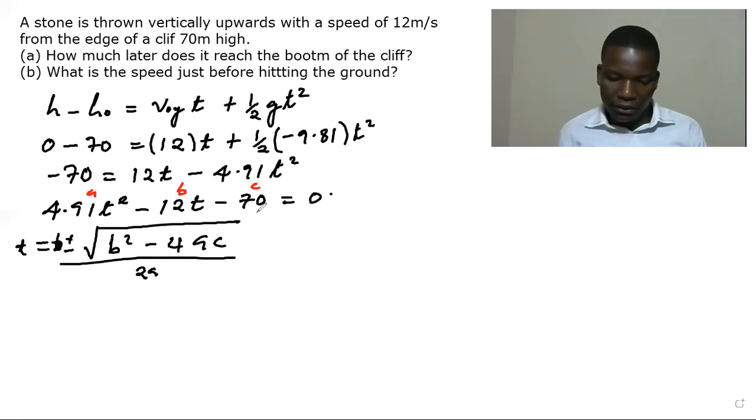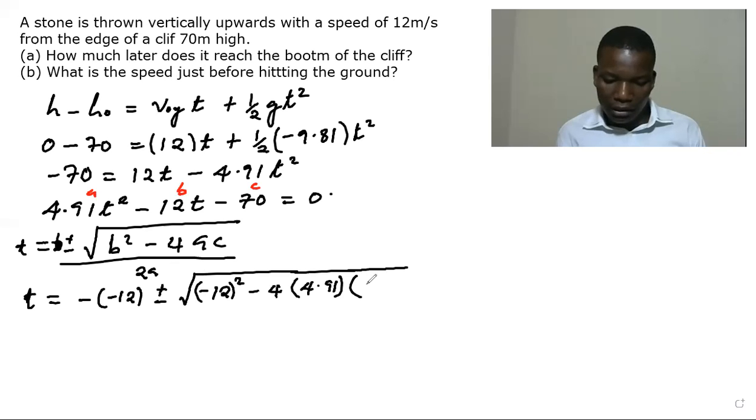So we're going to have t being equal to negative b, we have negative 12. So you have to be careful on substitution. b is negative 12 squared minus 4. Our a is 4.91 and our c is negative 70. And the whole of this is divided by 2a and our a is 4.91.